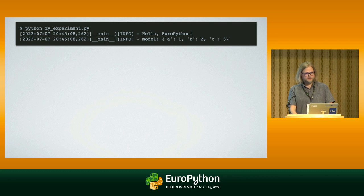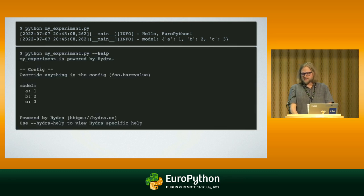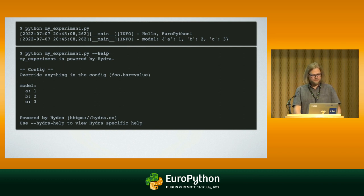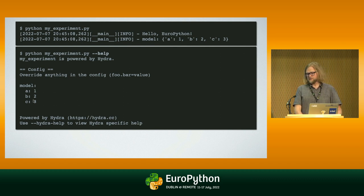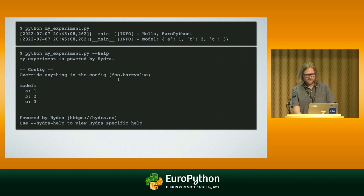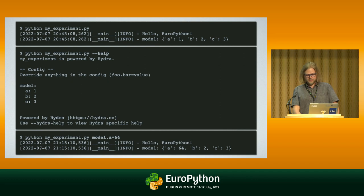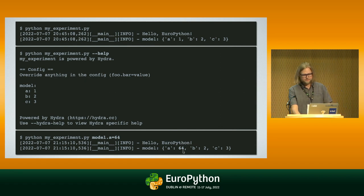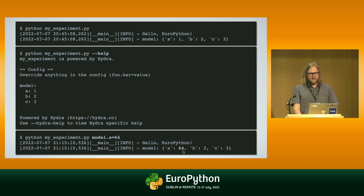Immediately out of the box you get a couple of other features. You can ask your application for help, which checks the configuration objects available and lists them for you — so you can inspect the different parameters of your application. It tells you that you can override anything in the config with a dotted path and a value. So you can run your script saying model.a equals a different value and it will actually equal that other value when you run it. This way you can set your configuration parameters at the command line without having written much beyond adding the Hydra decorator.